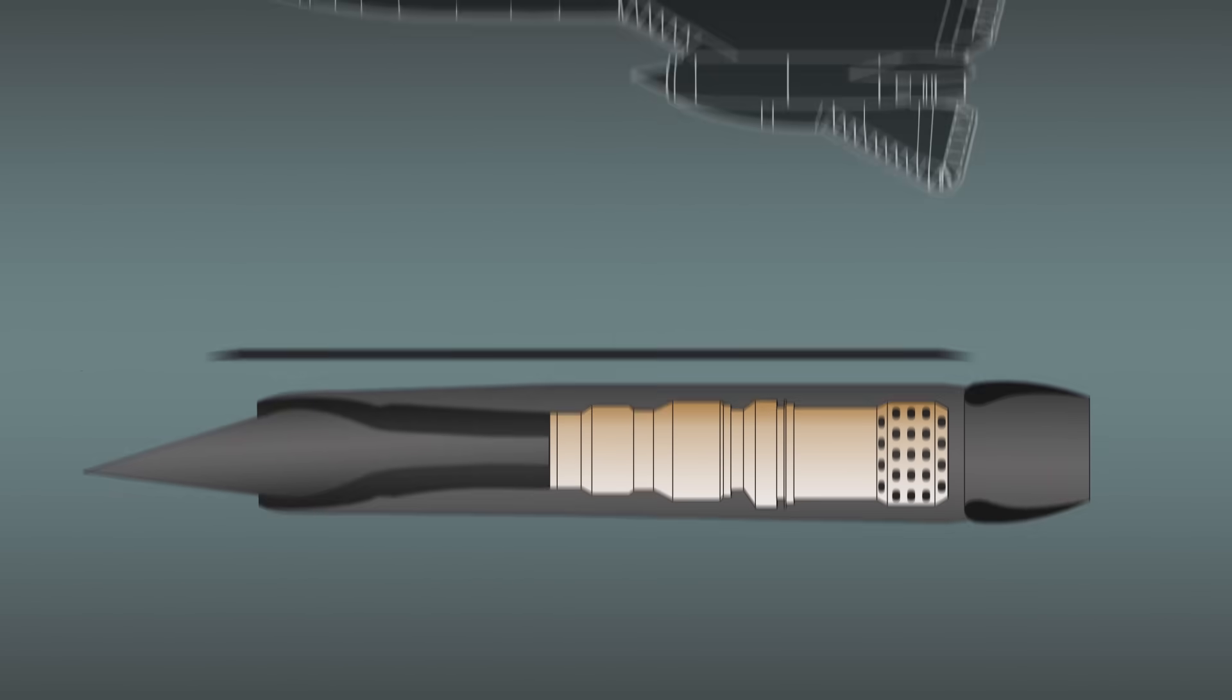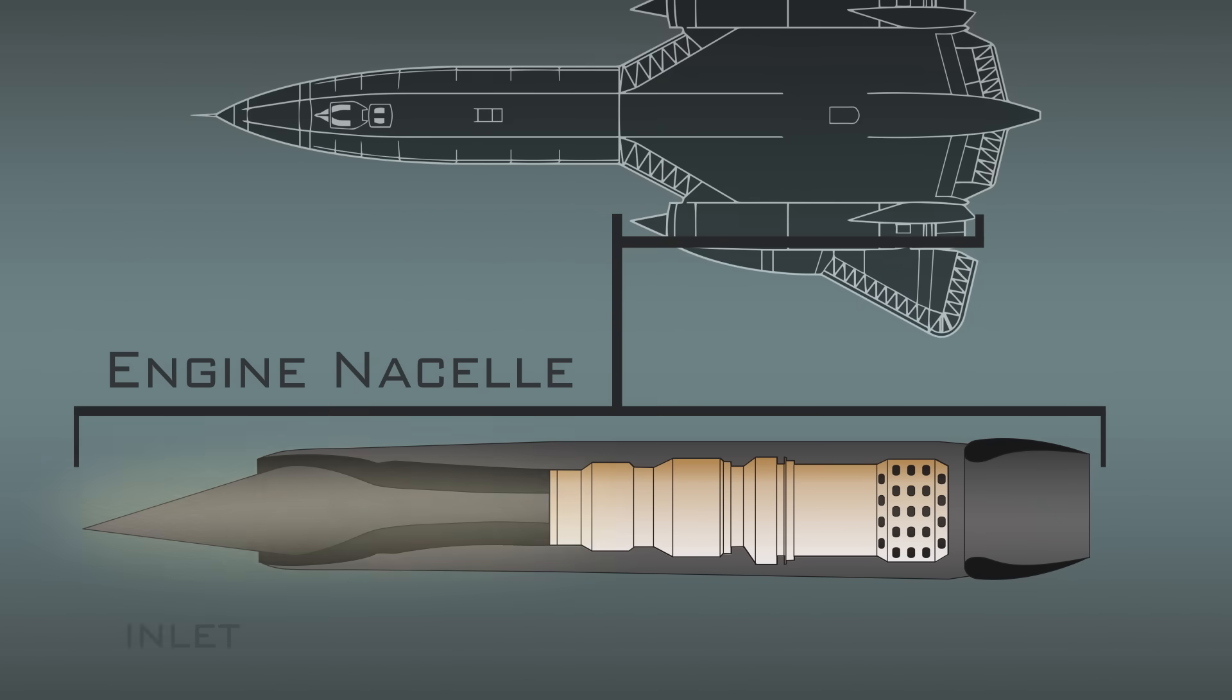There we go! The whole diagram is the complete engine nacelle, made up of the airflow inlet, the Pratt & Whitney J58 engine, the convergent divergent ejector, and the airplane body.